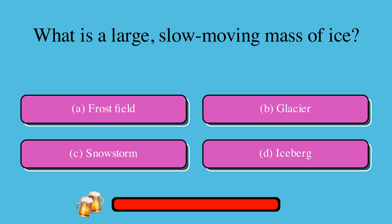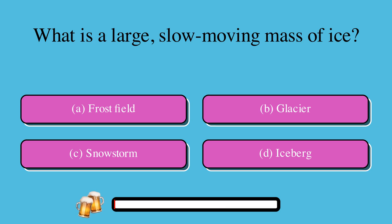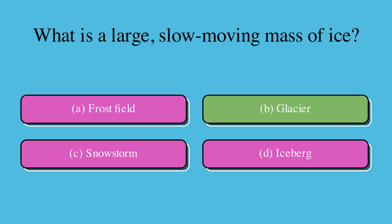What is a large, slow-moving mass of ice? A. Frostfield, or B. Glacier, or C. Snowstorm, or D. Iceberg? The correct answer is B. Glacier.